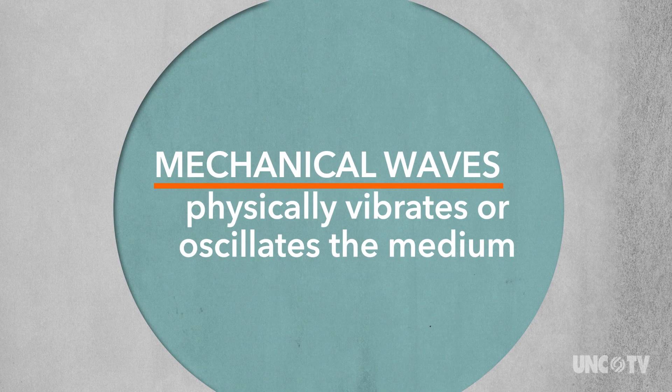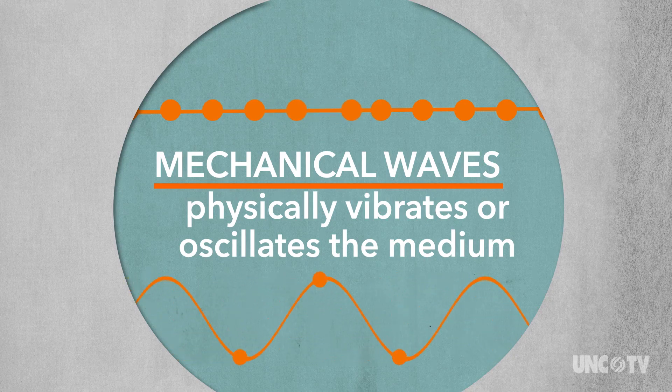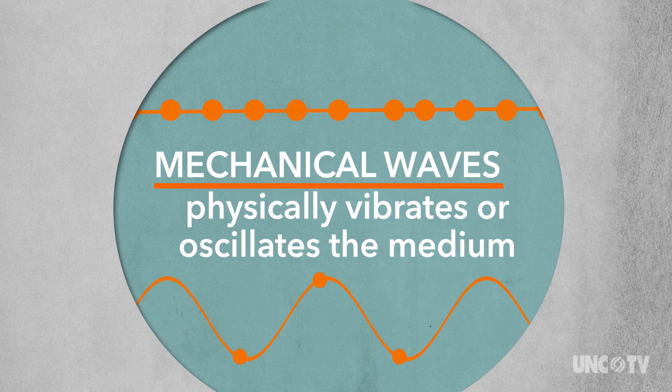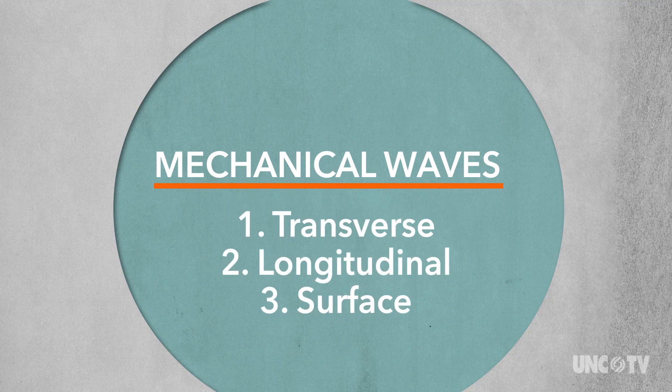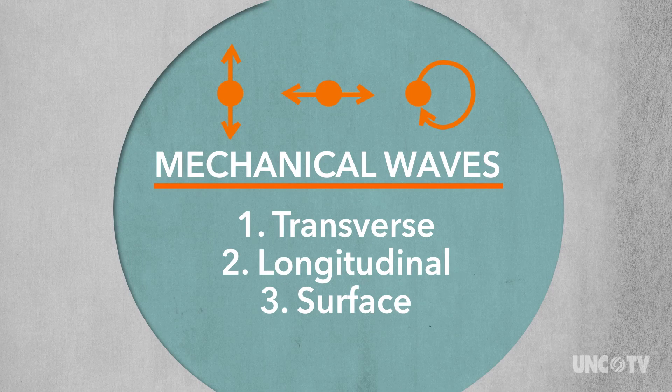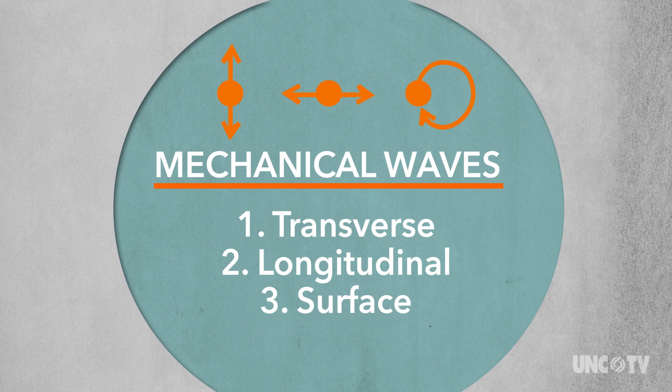A mechanical wave is a type of wave that physically vibrates or oscillates the medium as it transfers energy. There are three main types of mechanical waves that are defined by how and in which direction the medium moves.